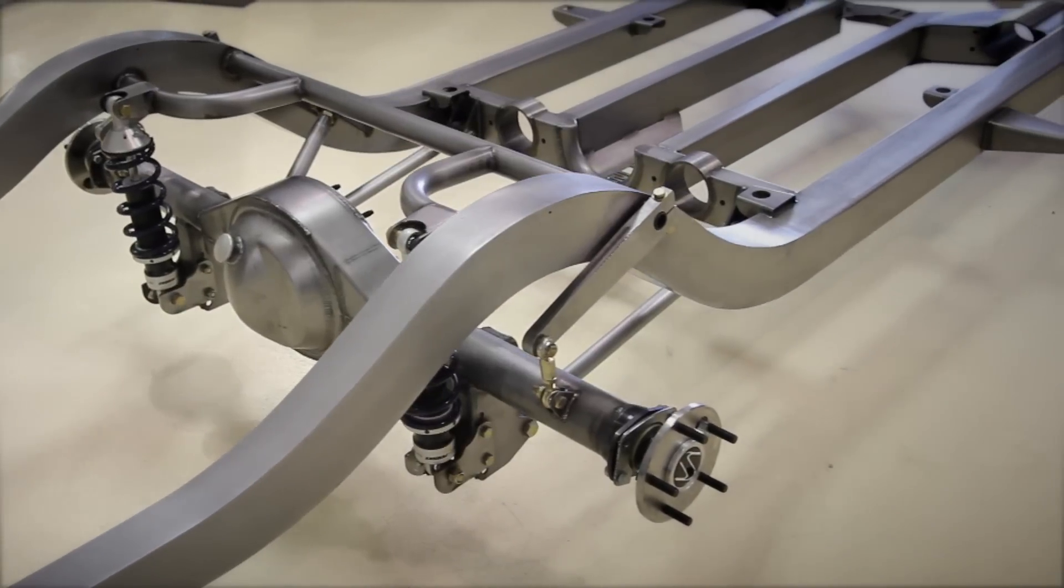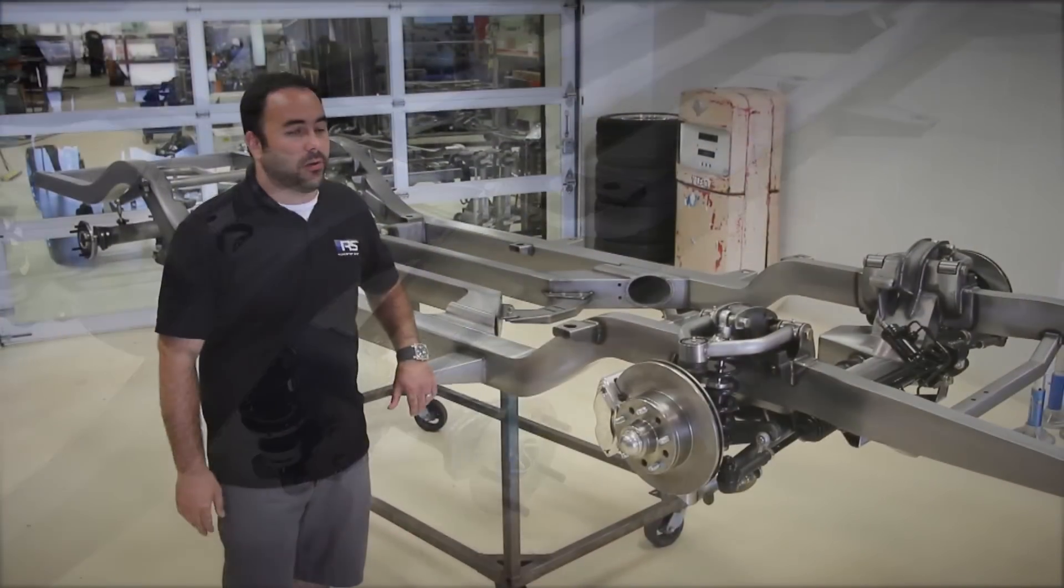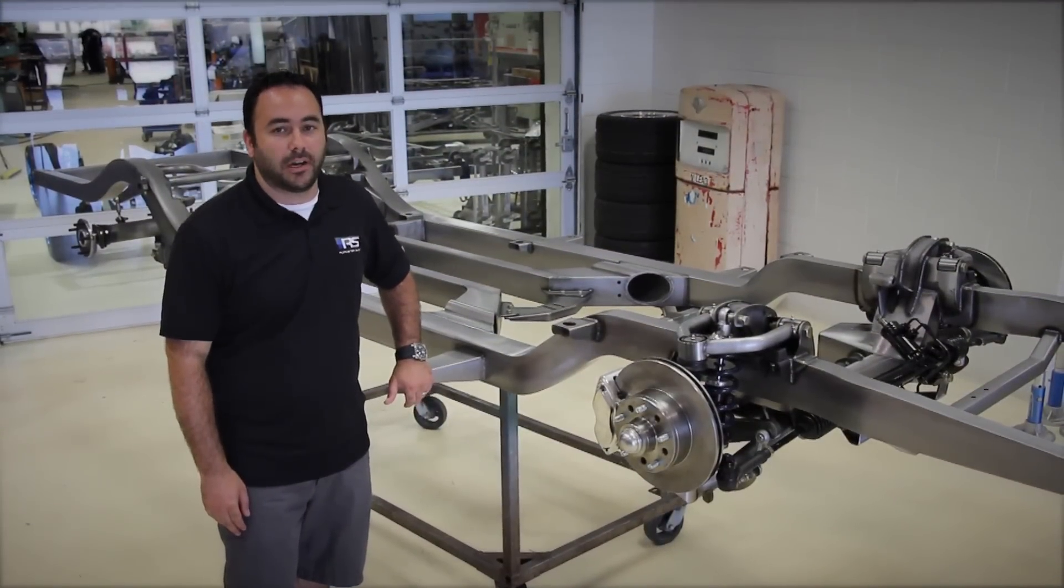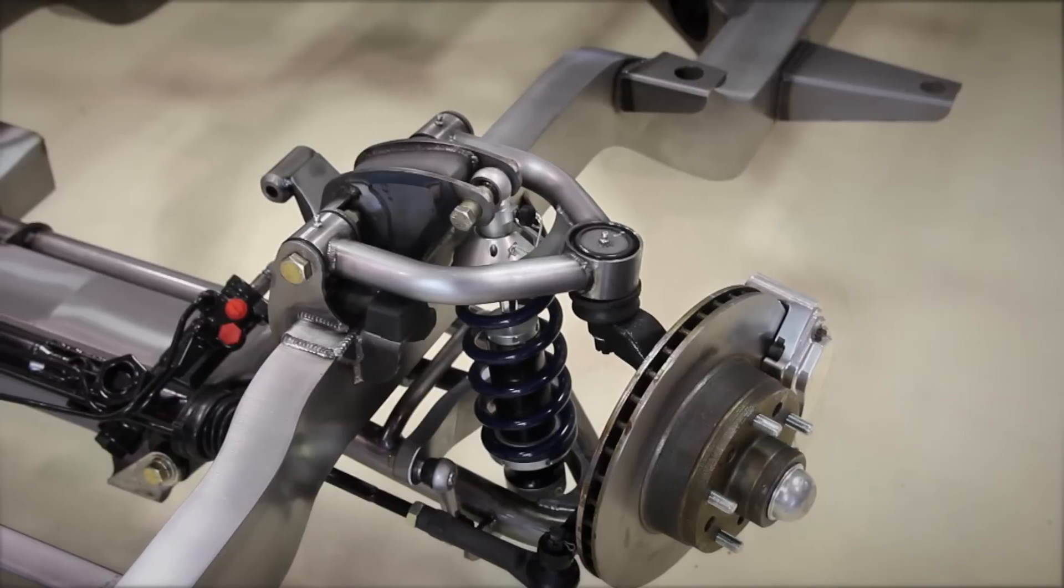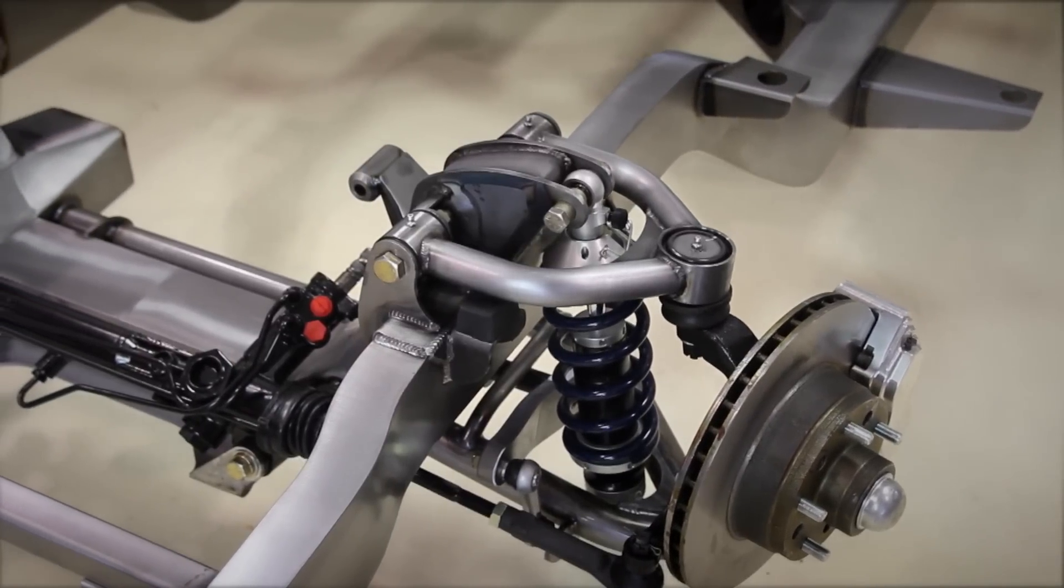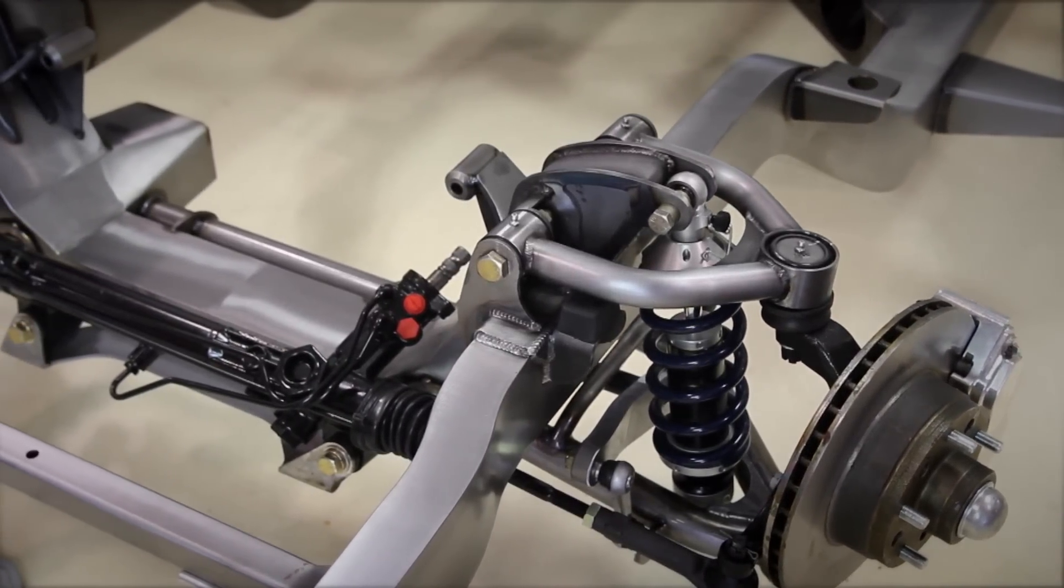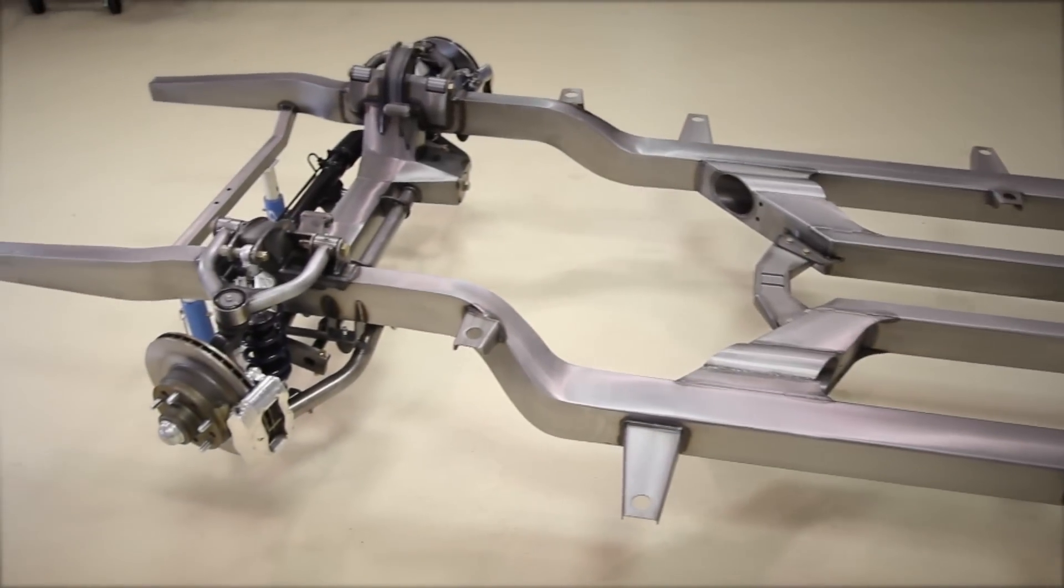A Tri-5 chassis has been our most popular chassis since we came out with it almost 10 years ago now. With the addition of the new Revo front suspension to the Tri-5 Chevy chassis, we really expect it to continue to be one of our strongest, most popular chassis.